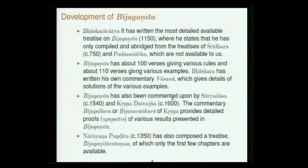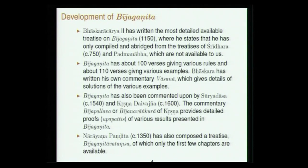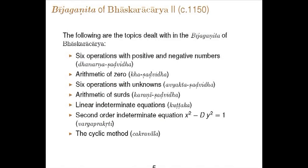Two important commentaries on Bijaganita are one by Surya Dasa and one by Krishna Daivajna. The commentary of Surya Dasa has been partially edited and printed, while Krishna Daivajna's commentary is available in published form in full and discusses proofs of various results. There is another important work on algebra by Narayana Pandita called Bijaganita Avatamsa, but only the first few chapters up to Chakravada are available.